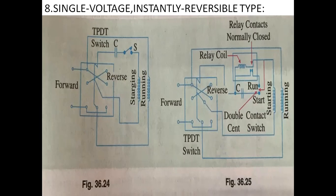For some applications, we need instant reversal while the motor is operating at full speed. A relay is fitted in the circuit which short-circuits the centrifugal switch and connects the starting winding in the circuit in the reversal position. By using the relay, if we want to instantly change the direction of the motor, we short-circuit the centrifugal switch and connect the starting winding in reverse direction. If we close or open the relay, the direction will be changed.